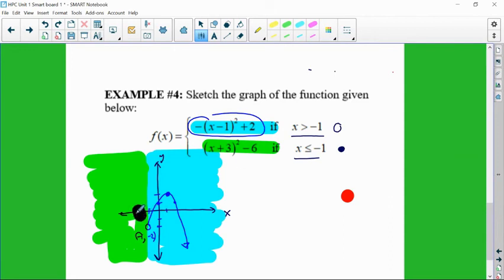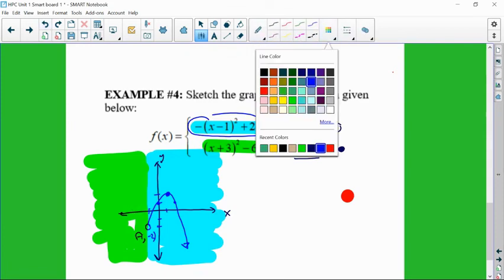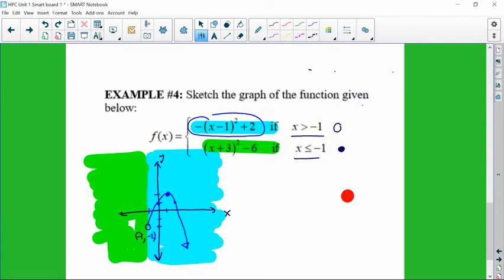So 1, 2, 3, and then negative 6. So 1, 2, 3, 4, 5, 6. So here's the vertex. It is opening up. And so then, again, thinking about going 1 to the right, up 1 squared.